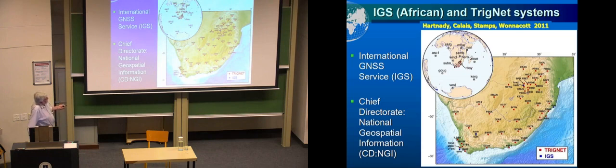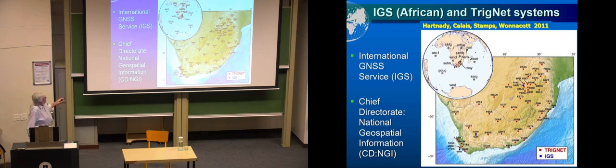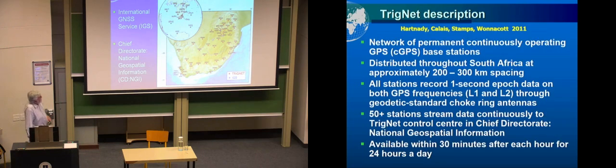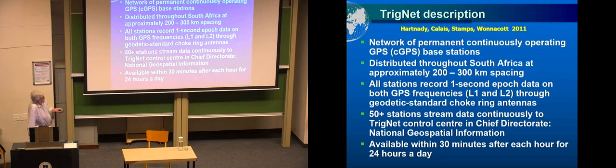With the South African Trignet system, established by my colleague Richard Wanicott when he was with Trig Survey in Mowbray, there is also the International Global Navigation Satellite Systems Service — IGS — which runs more than 100 stations around the globe. These include important African ones such as Sutherland, Hartebeesthoek, and Richards Bay, all part of a network of permanent continuously-operating stations. In South Africa they're at about 200 to 300 kilometer spacing and form the basis of the whole South African geodetic and surveying system now. Surveyors don't sight to trig beacons anymore — it's to GPS stations.